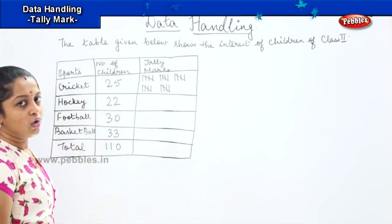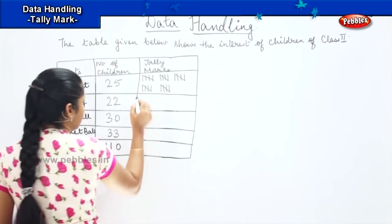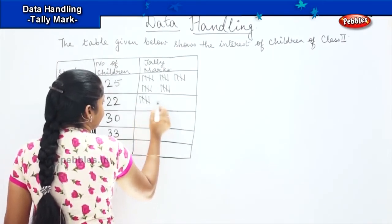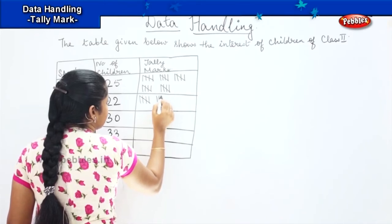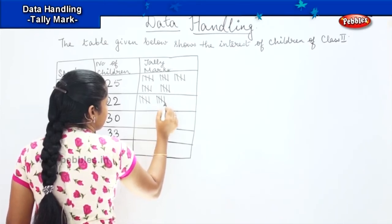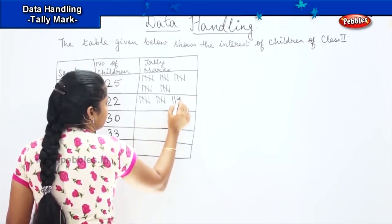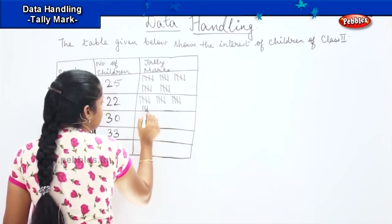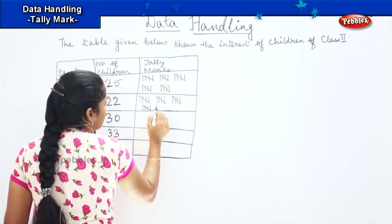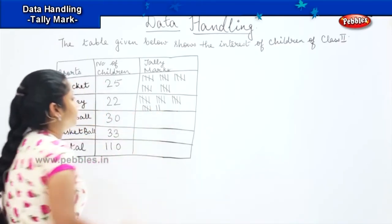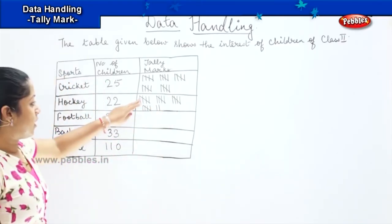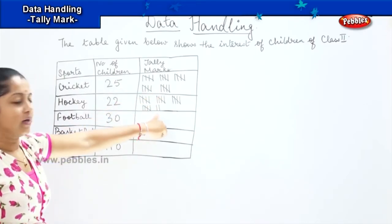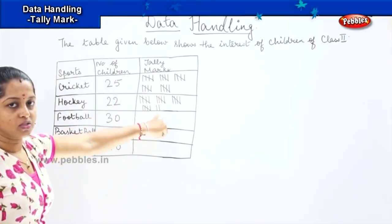Next we are going to draw 22 for hockey. 1, 2, 3, 4, slanting 5, 6, 7, 8, 9, slanting 10, 11, 12, 13, 14, slanting 15, 16, 17, 18, 19, slanting 20, 21, and 22. So we have 4 tally marks with a slanting line and the fifth group is just two vertical lines.